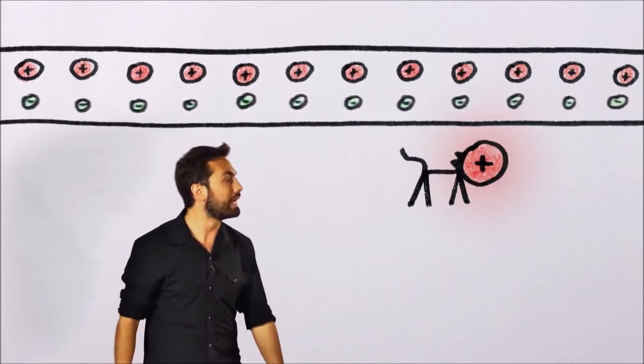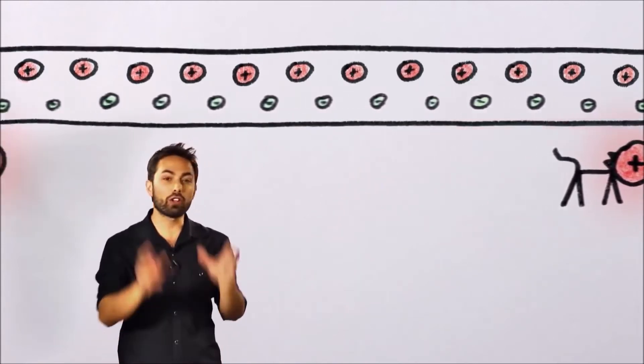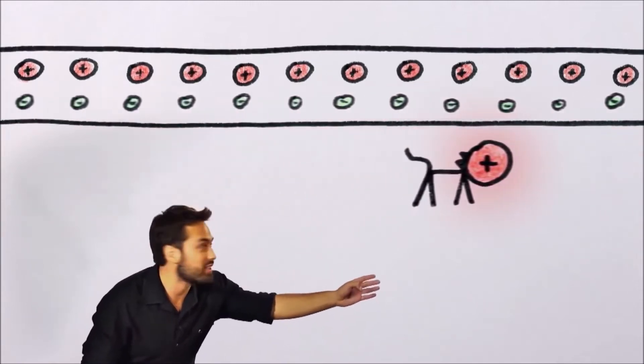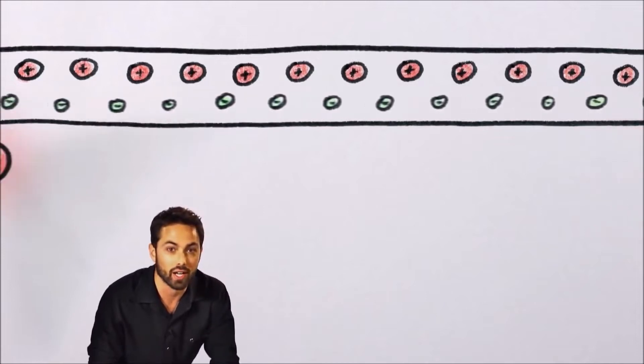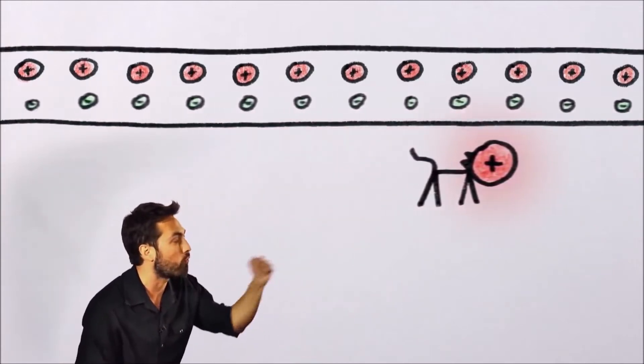But what if the cat starts moving? Imagine for simplicity that the cat is moving in the same direction as the electrons with the same velocity. Well now, in my frame of reference, the wire is still neutral, and so there should be no force on the cat.